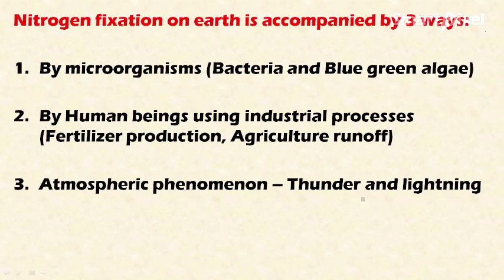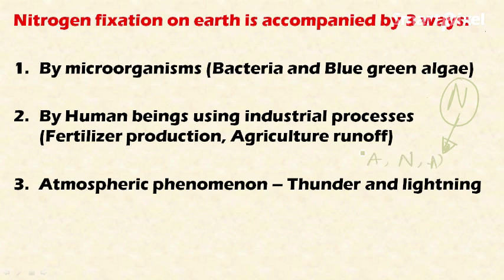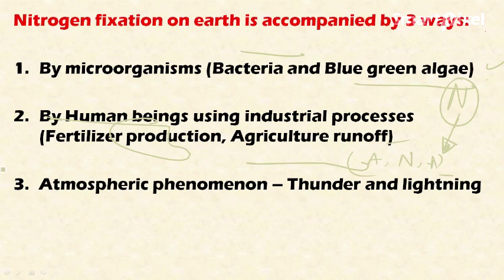Nitrogen fixation on Earth is accomplished by three ways. First, by microorganisms like bacteria and blue-green algae. Second, by human beings using industrial processes like fertilizer production — agriculture runoff also contributes nitrogen to the soil. Third, by atmospheric phenomena: lightning and thunderstorms fix atmospheric nitrogen into nitrates.